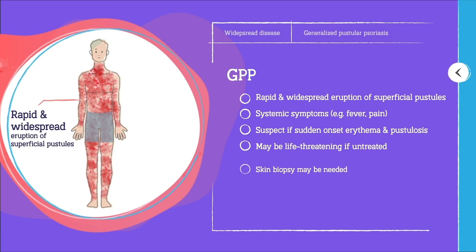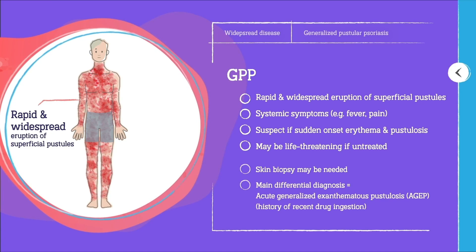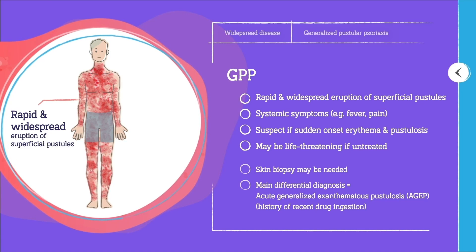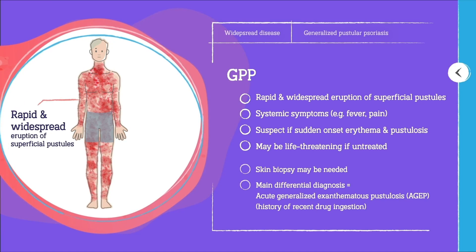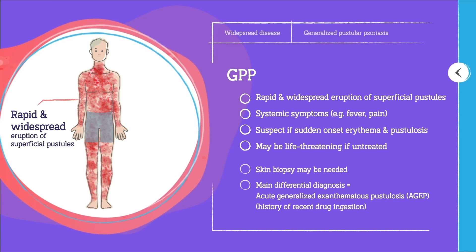GPP may be potentially life-threatening if left untreated, due to complications such as sepsis and multi-system organ failure. In the absence of a history of psoriasis, other conditions may need to be considered, and a skin biopsy may be helpful. The main diagnosis to exclude is AGEP.